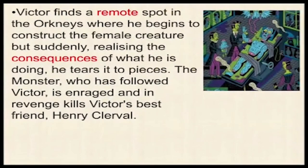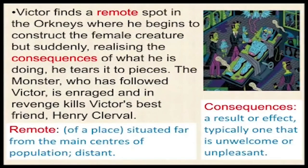Victor finds a remote spot in the Orkneys — a distant place far from main centers of population — where he begins to construct the female creature. But suddenly realizing the consequences of what he is doing, he tears it to pieces. The monster, who has followed Victor, is enraged and in revenge kills Victor's best friend.